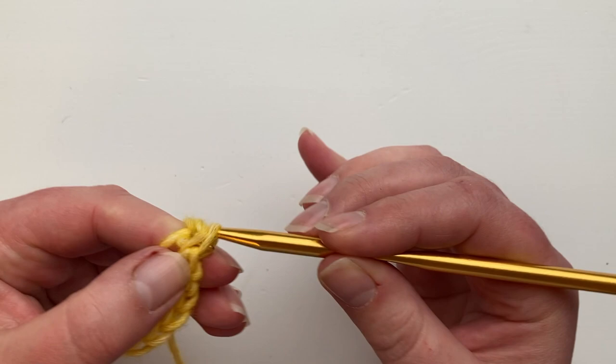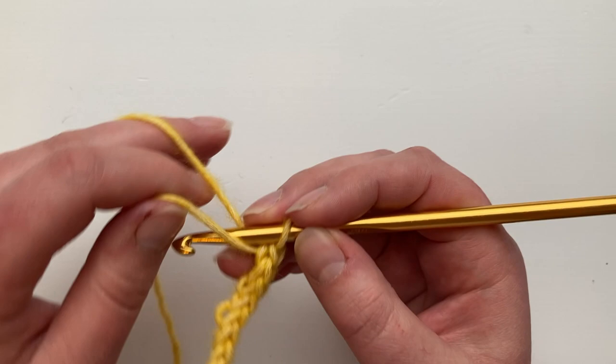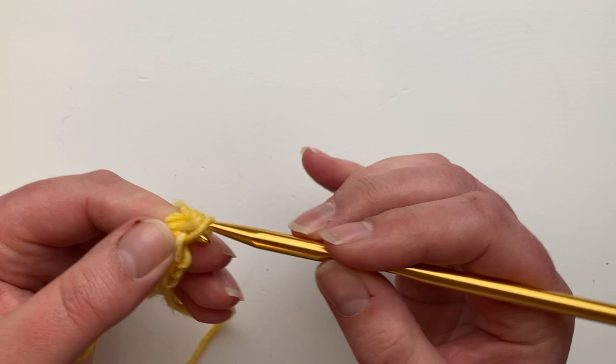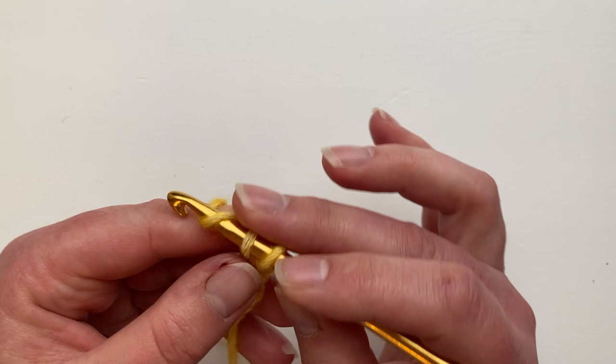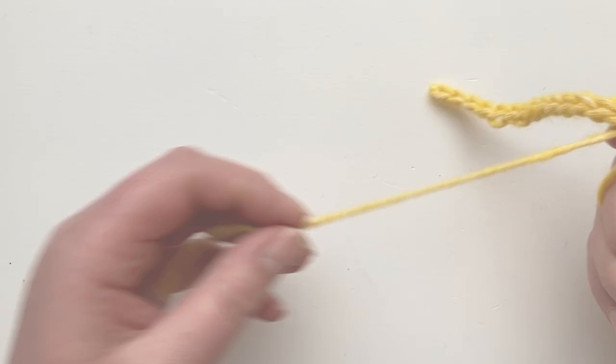Nine, ten, eleven, twelve, thirteen, fourteen and fifteen. There we go. Fifteen stitches, a lovely flexible chain and a tail which if we measure is just about 15 centimeters as promised.